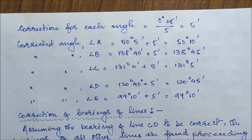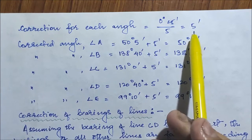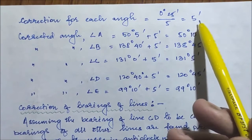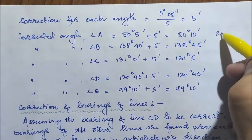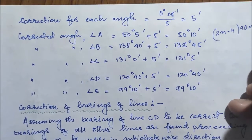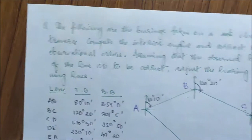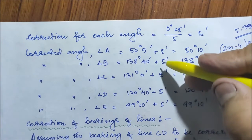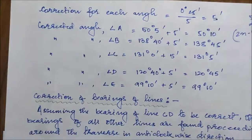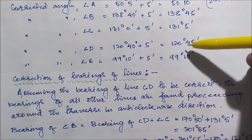The correction for each included angle is 0°25′ ÷ 5 = 5′. Since the actual sum of 539°35′ is less than the required 540°, we add 5′ to each included angle. We have done that and found the corrected values of all the included angles. Now we move to the correction of the bearings of all the lines.